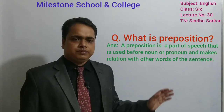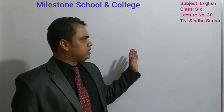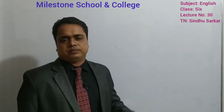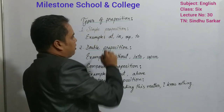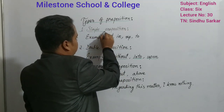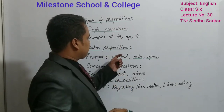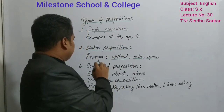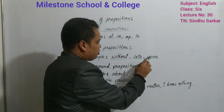Now I am going to discuss the types of preposition. First one: simple preposition. Examples are at, in, up, to. Then, double preposition — without, into, upon. Why is it called double preposition? Because within this preposition, you are getting two prepositions.